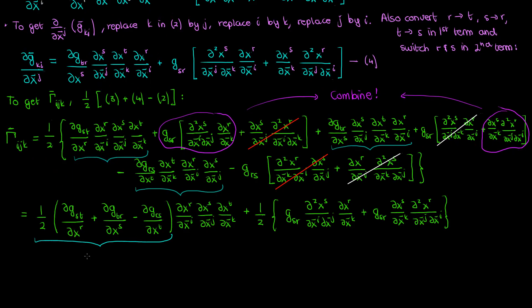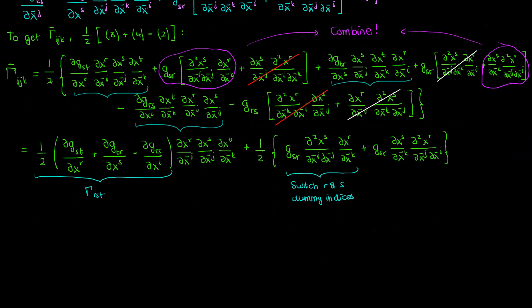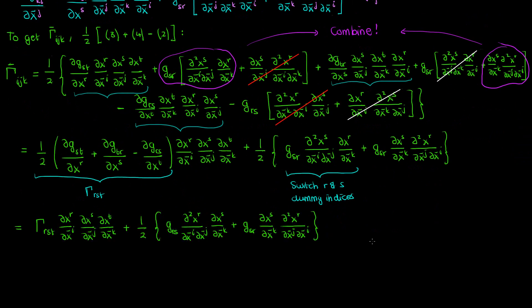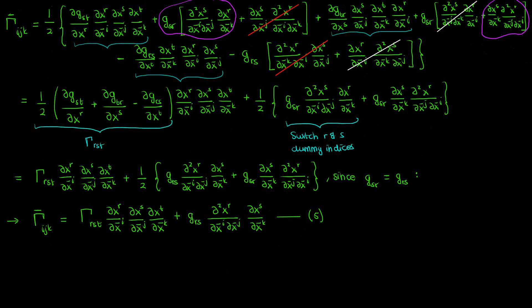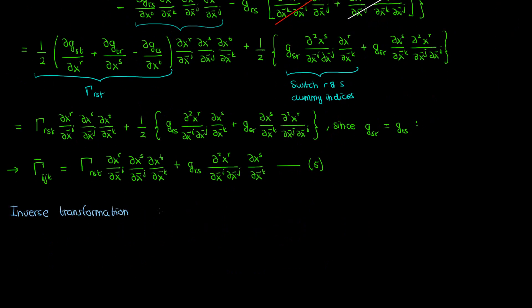Looking at the first term in the parentheses, it looks like the Christoffel symbol of the first kind with indices r, s, and t — so I make that substitution. Looking at the second term in the braces, if I switch r and s since they're dummy indices, and recognizing that g sub rs and g sub sr are exactly the same since the metric tensor is symmetric, I can combine these two expressions in the braces. This gives my complete simplified transformation equation for the Christoffel symbol of the first kind, which I'll call equation 5.